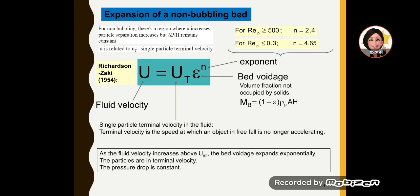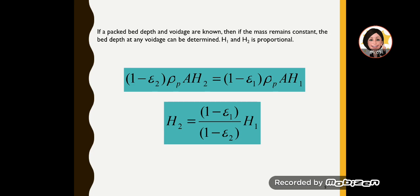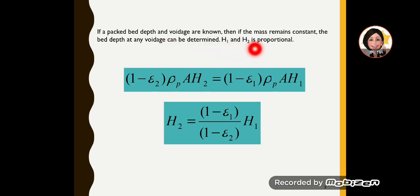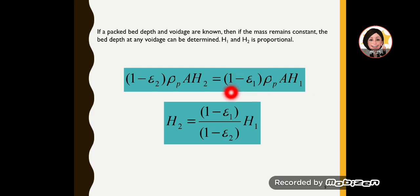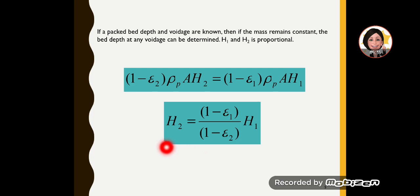If the packed bed depth and voidage are known, and the mass remains constant, the bed depth at any voidage can be determined. H1 and H2 are proportional — so when voidage increases, the height of the bed also increases proportionally. We can use this equation to find H1 and H2.